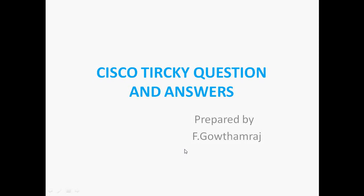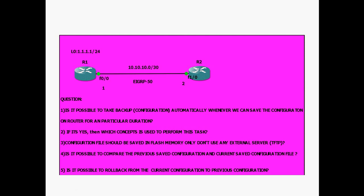Hi friends, this is Gautam. In this video tutorial we are going to discuss Cisco tricky questions and answers. The scenario uses two routers R1 and R2 on a point-to-point network with 10.10.10.0/30, and in R1 there is a loopback 1.1.1/24. R1 and R2 are configured with EIGRP routing protocol for full reachability.